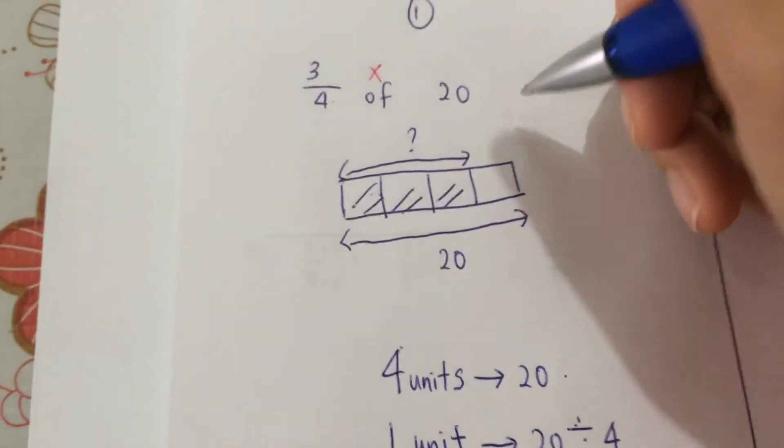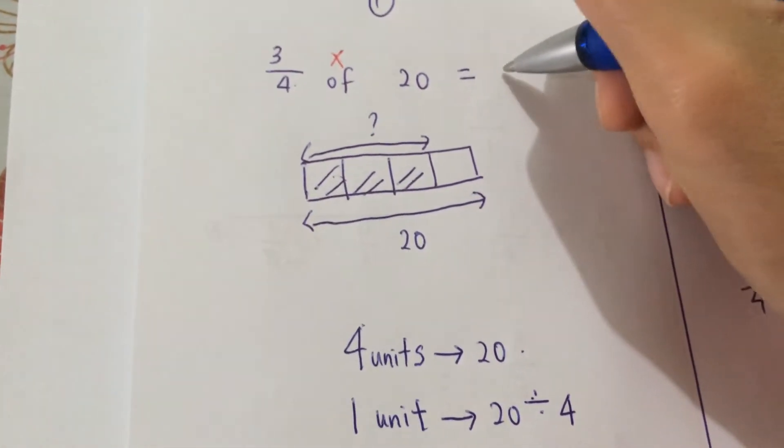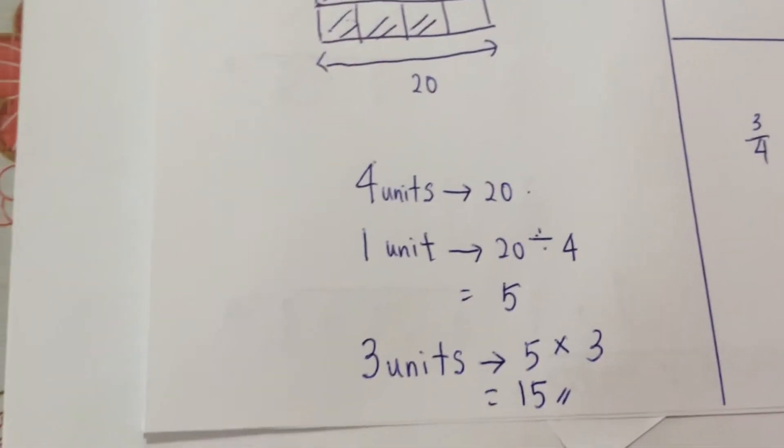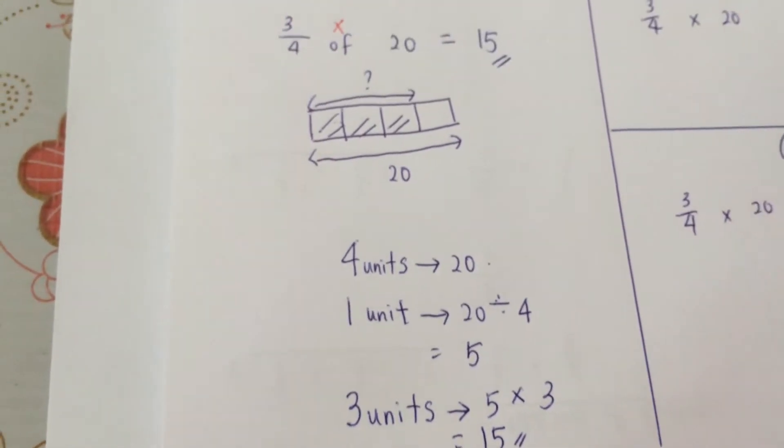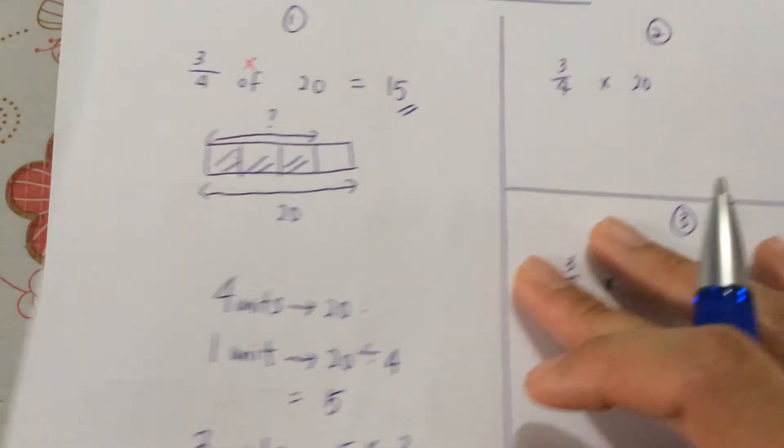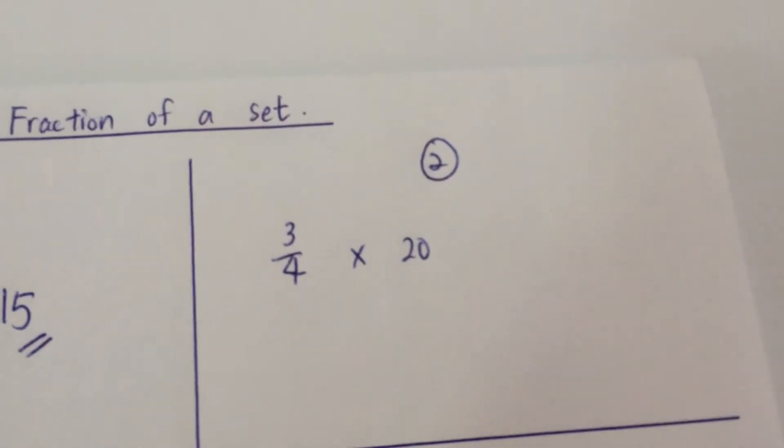So, 3 out of 4 of 20 is 15. This is method 1, to use a model to help you. Let's take a look at method 2, which is a more straightforward method.